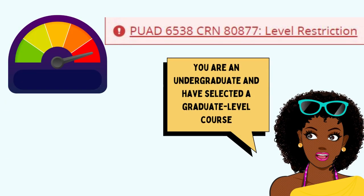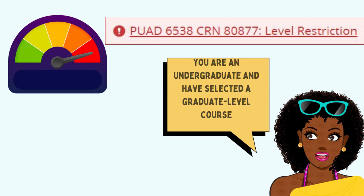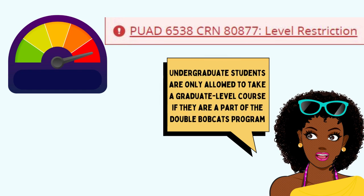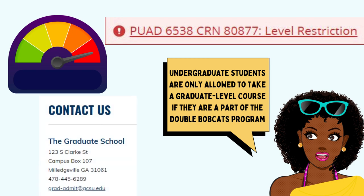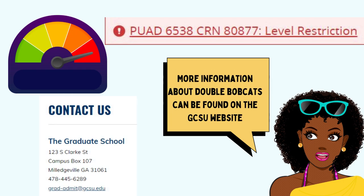This error means that you are an undergraduate student and have selected a graduate level course. Undergraduate students are only allowed to take a graduate level course if they are part of the Double Bobcats program. More information about Double Bobcats and how to apply can be found on the GCSU website.